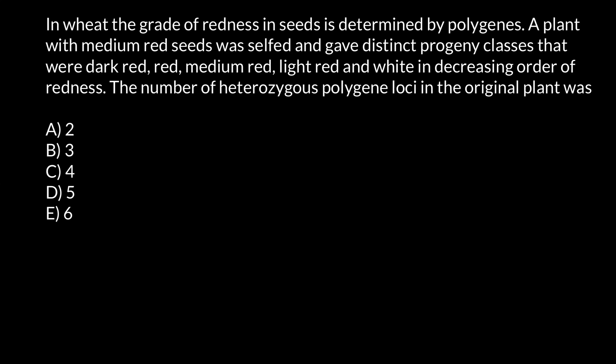Hello and welcome to Nikolai's genetics lessons. Today's problem is: in wheat, the grade of redness in seeds is determined by polygenes. A plant with medium red seeds was selfed and gave distinct progeny classes that were dark red, red, medium red, light red, and white in decreasing order of redness. The number of heterozygous polygene loci in the original plant was — and we have to choose the correct answer.